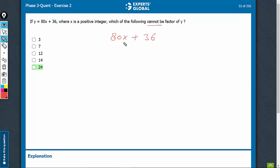3 can, of course, be a factor when x is a multiple of 3. Imagine 80 times 3 plus 36 will be a multiple of 3. 3 will be a factor of it. So 3 can be eliminated.